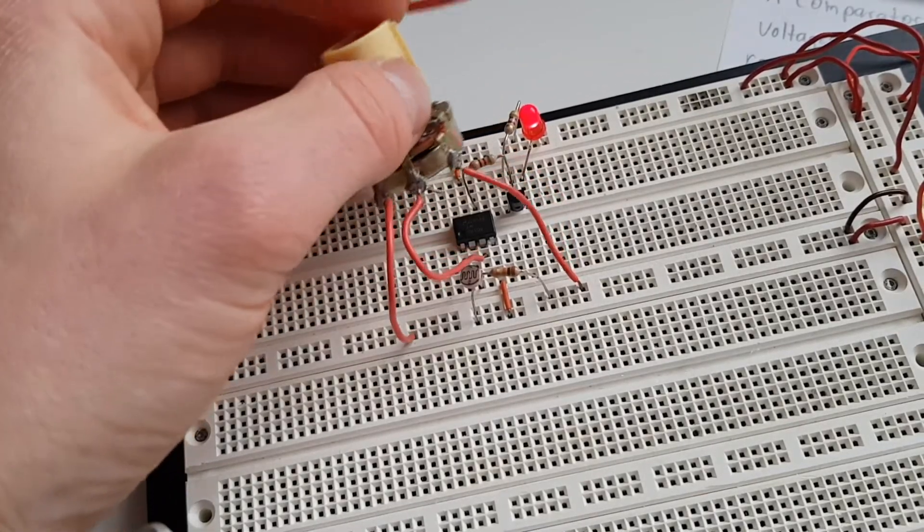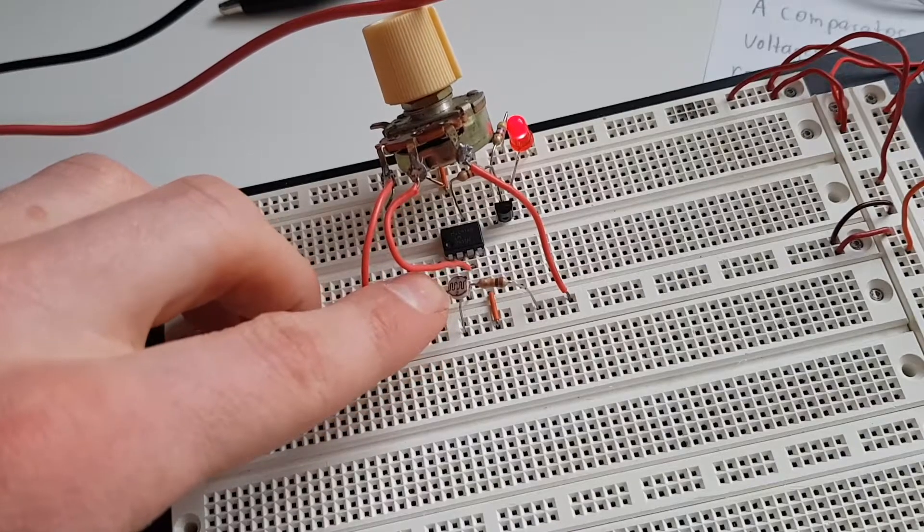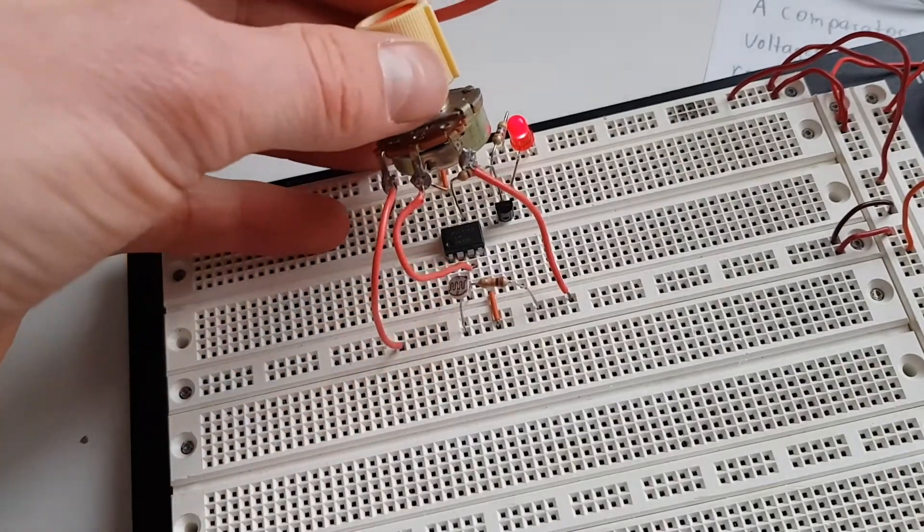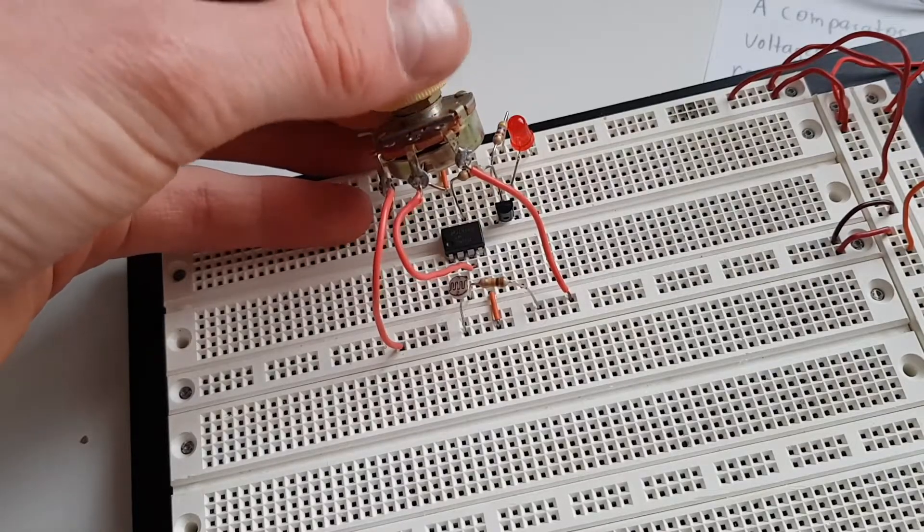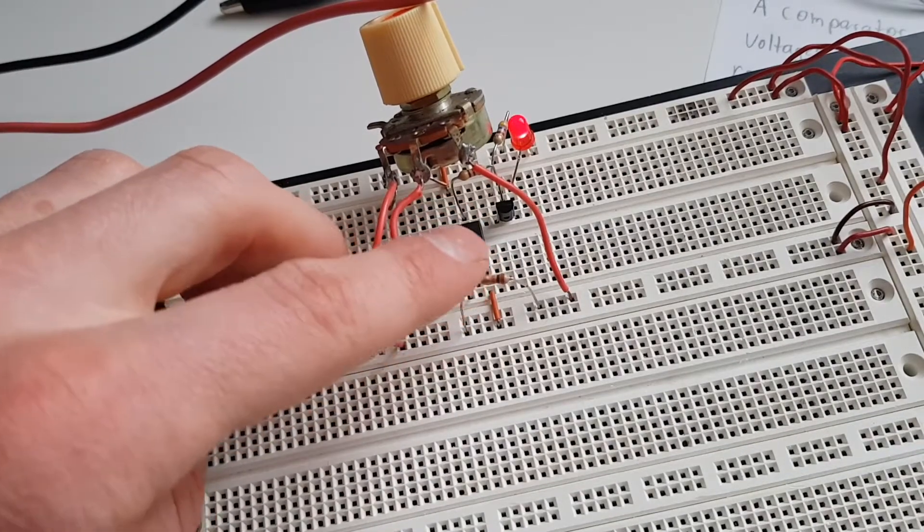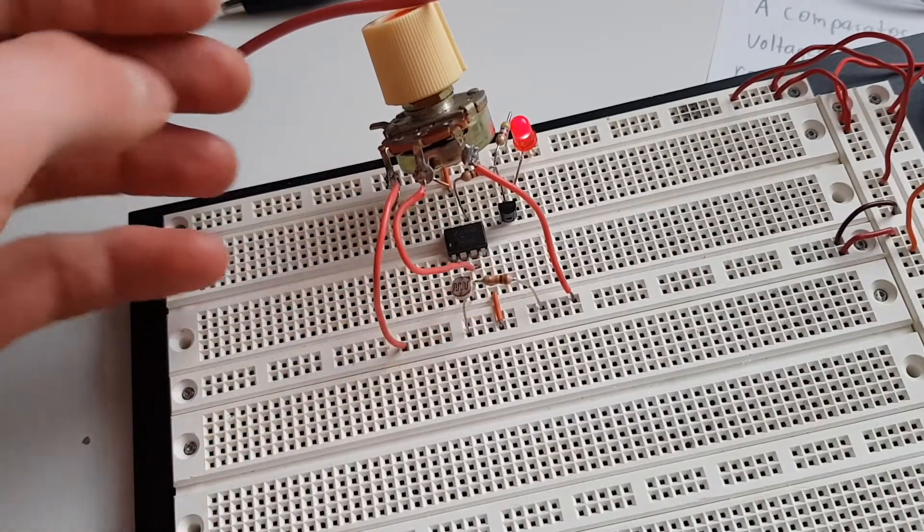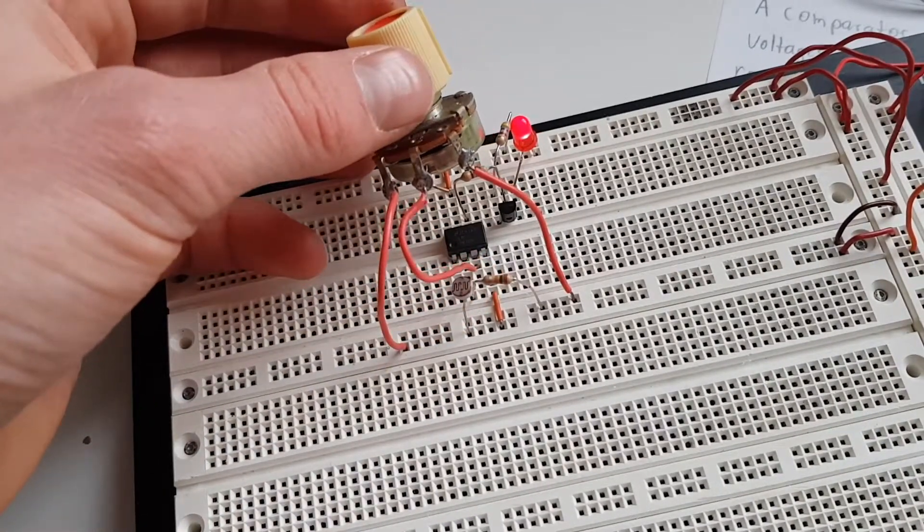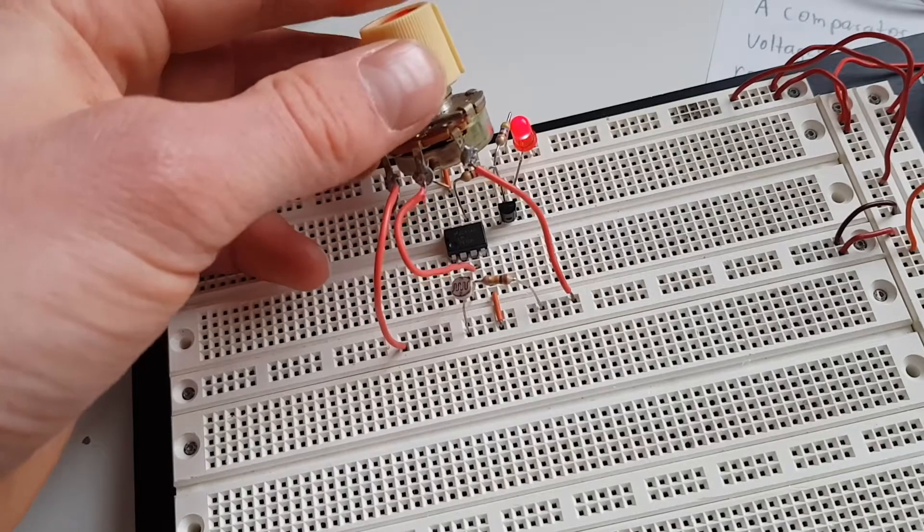So basically what you see here is instead of two potentiometers, I just have a light-dependent resistor and a potentiometer on the other input. So when I turn the pot it kills the LED, or if I cover the light-dependent resistor it also turns off the LED. So you can use this circuit as like a sort of an on-off indicator for like a sensor input of some kind.